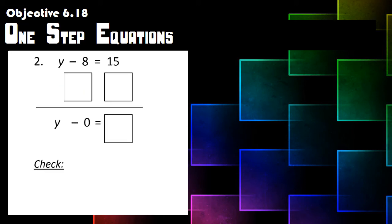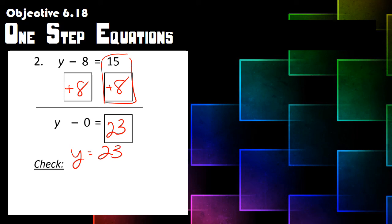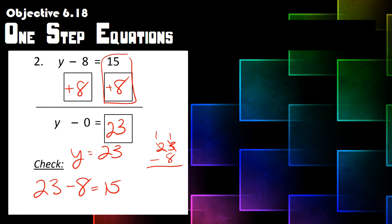Next: Y minus eight equals fifteen. The opposite of subtraction is addition, so we add eight to both sides. Y is brought down, and fifteen plus eight gives us twenty-three. So Y equals twenty-three. Let's check: twenty-three minus eight equals fifteen. Borrowing, thirteen minus eight is five, bring down the one — the answer checks out. Y equals twenty-three.